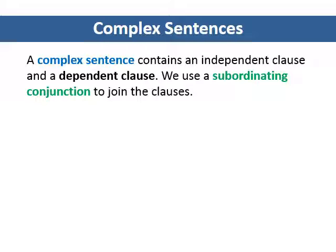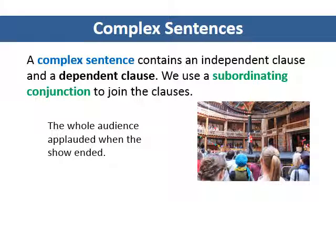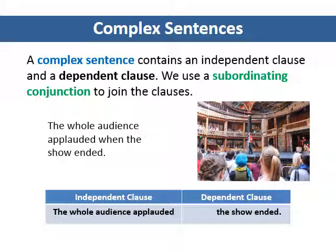Complex sentences. A complex sentence contains an independent clause and a dependent clause. We use a subordinating conjunction to join the clauses. For example: 'The whole audience applauded when the show ended.' This sentence has an independent clause with subject 'the whole audience' and verb 'applauded.' This clause can stand alone as a complete idea. The sentence also has a dependent clause, 'when the show ended,' which is not a complete idea by itself, because 'when' is a subordinating conjunction. Using a subordinating conjunction creates a dependent clause, which is always connected to an independent clause, and together they make a complex sentence.